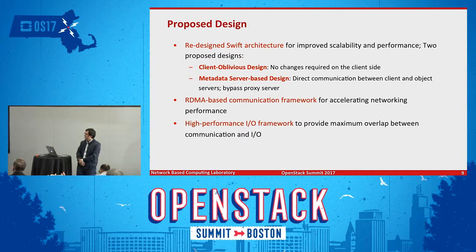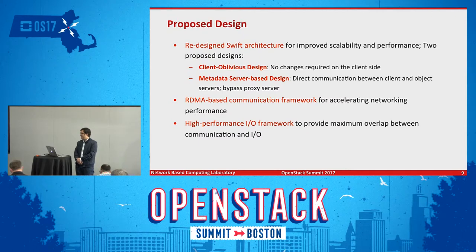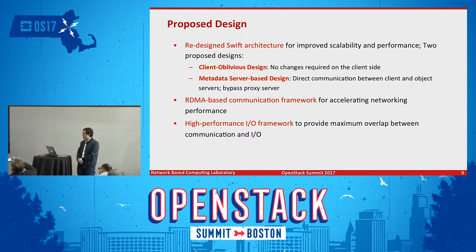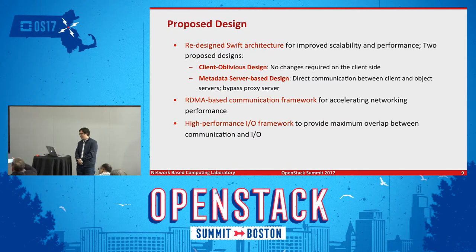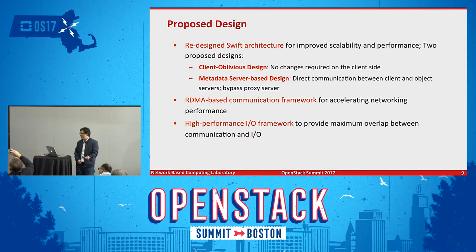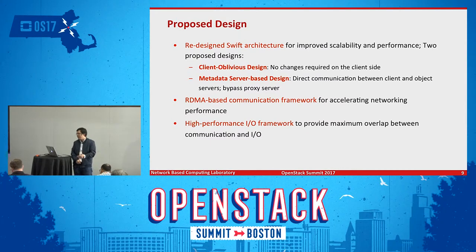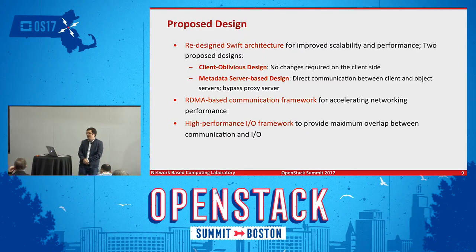In the proposed design, we actually did two different types of designs. The first is called the client oblivious design — no change is required on the client side. The other is a metadata server-based design, which enables direct communication between the client and object servers, bypassing the proxy server. All socket-based communication is replaced with RDMA-based protocol. RDMA is typically implemented with Verbs APIs, so we utilize native Verbs APIs to reimplement the communication substrate of OpenStack Swift, and we also provide overlapping between communication and I/O.